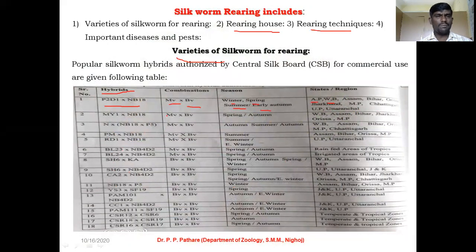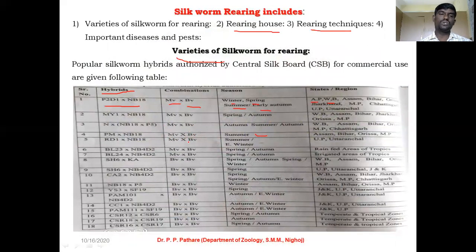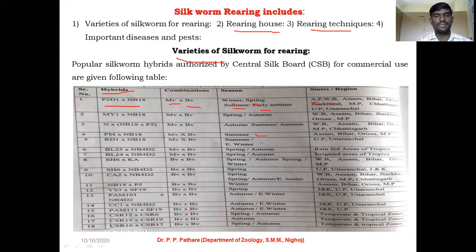There are a number of hybrids available with different basic features. For example, the PM×NB18 hybrid with the MV×BV combination is suitable only for summer season, because its characteristics suit high-temperature conditions. It is generally used in Assam, Bihar, Odisha, and MP.